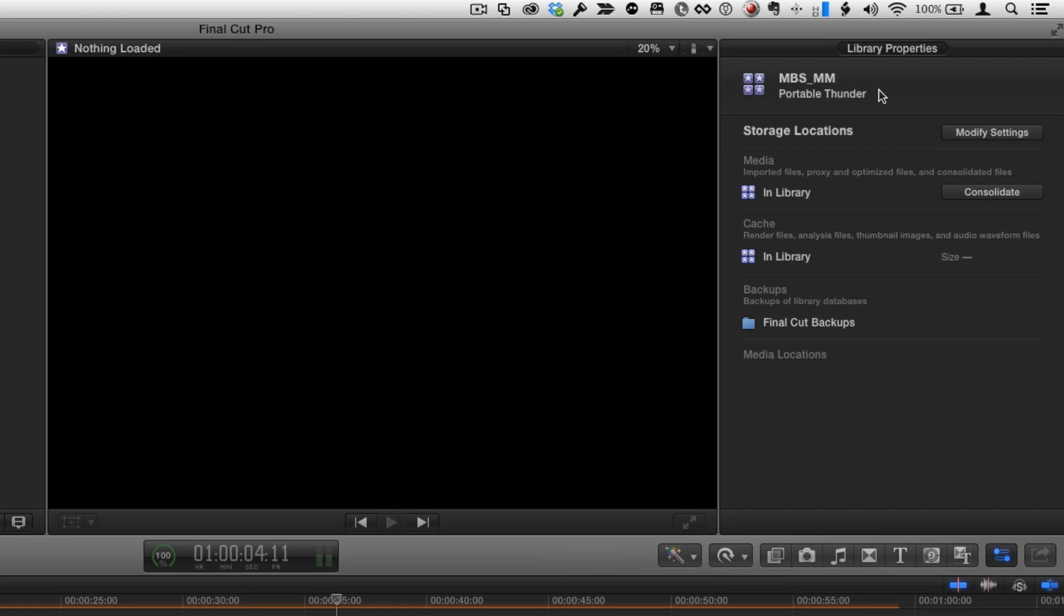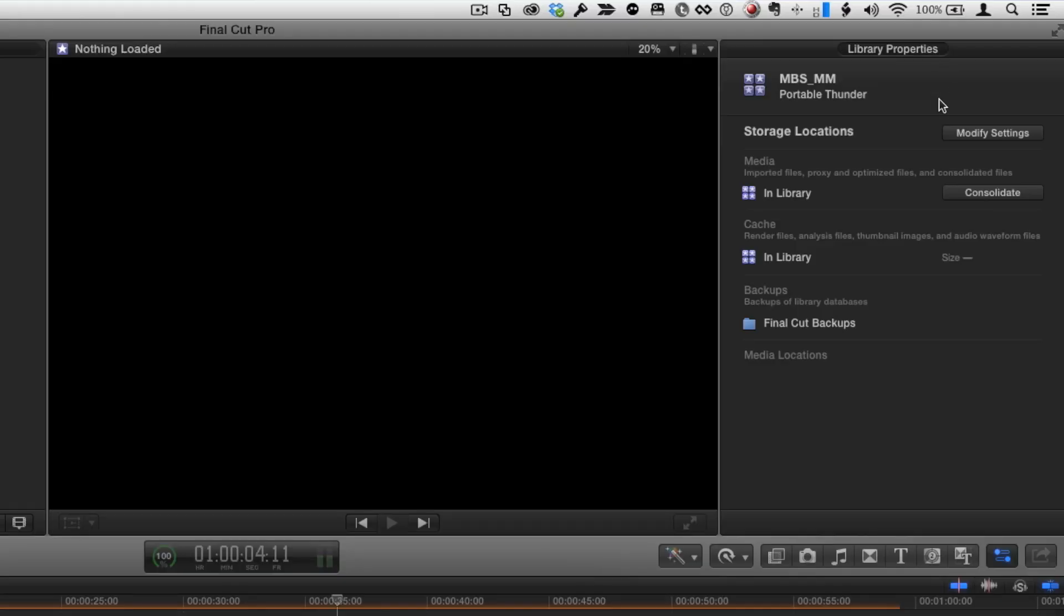A little window that wasn't there before is now there. It's the inspector. I can click it to open and close, but it popped open by itself as soon as you create a library. And there's a whole new pane here called library properties. So this whole pane is new and it establishes for you exactly what's going on with storage locations for everything. Let's overview it here. At the very top is the name of your library and the name of the drive that it's located on. So right away you know where it's located. It's broken into three primary locations here: media, cache, and backups.